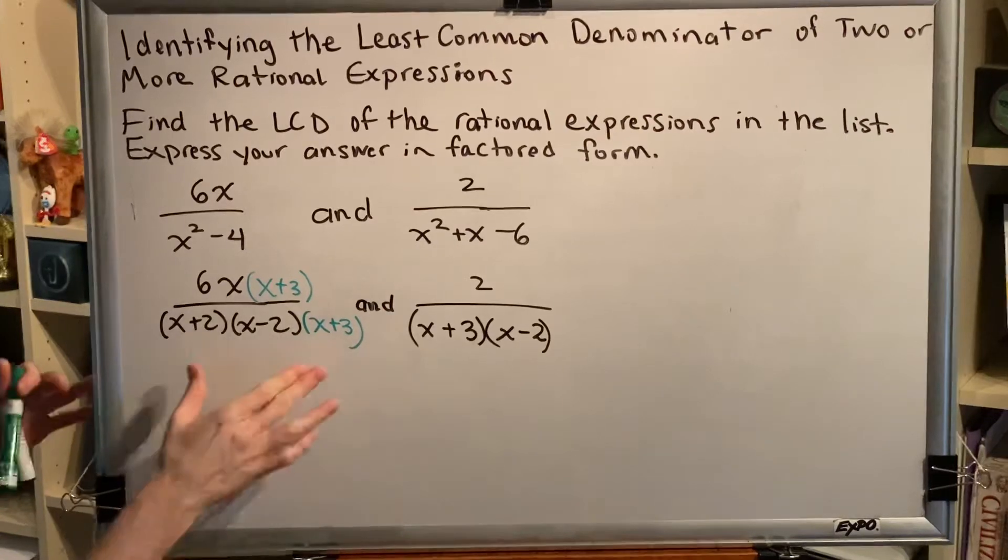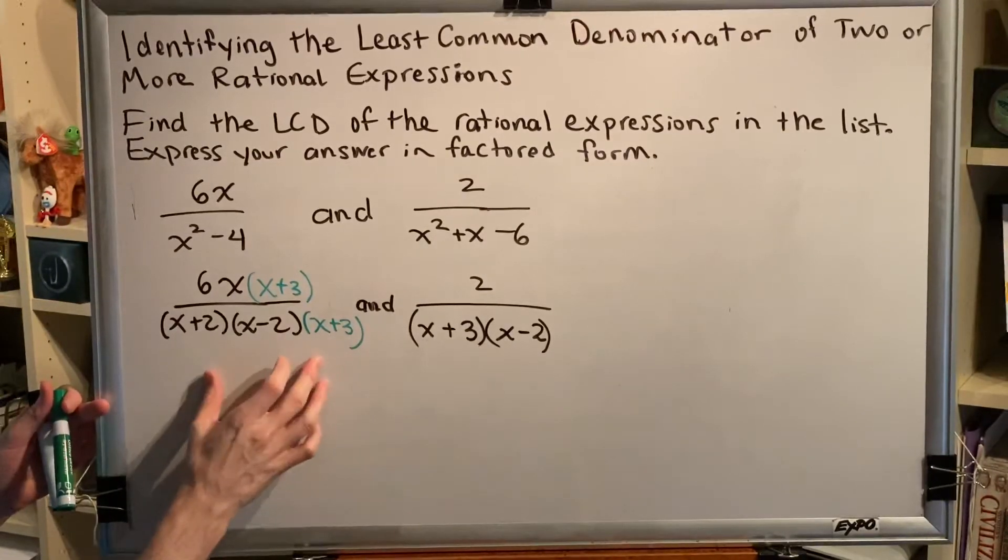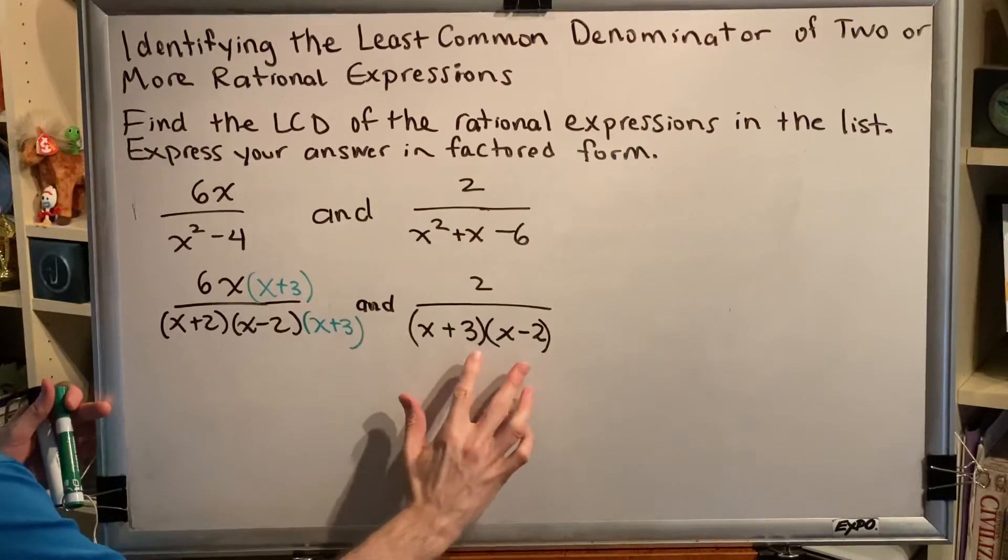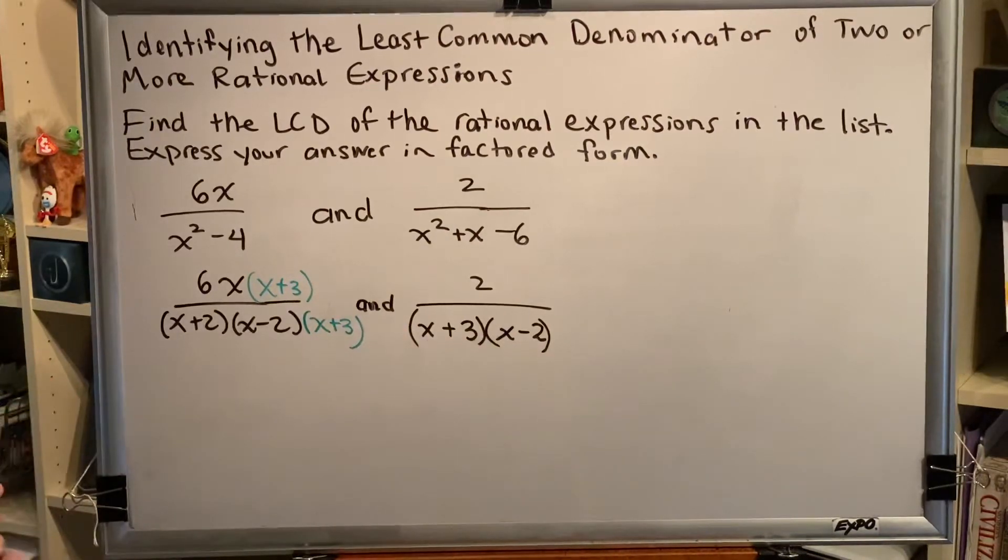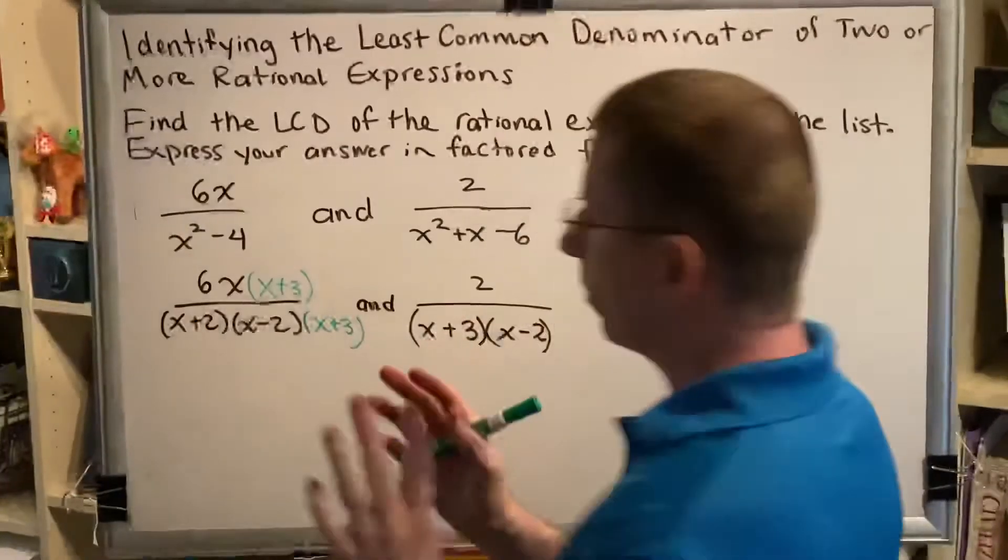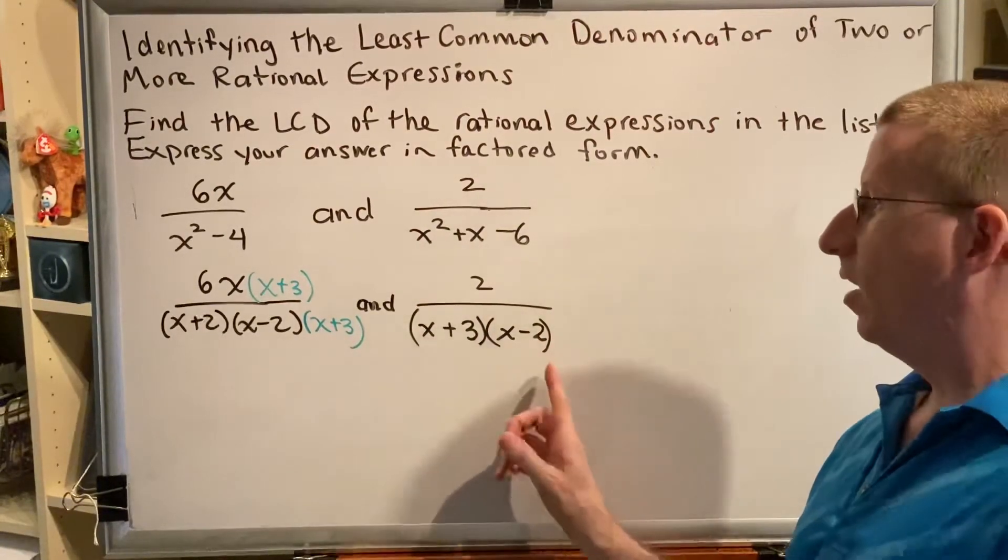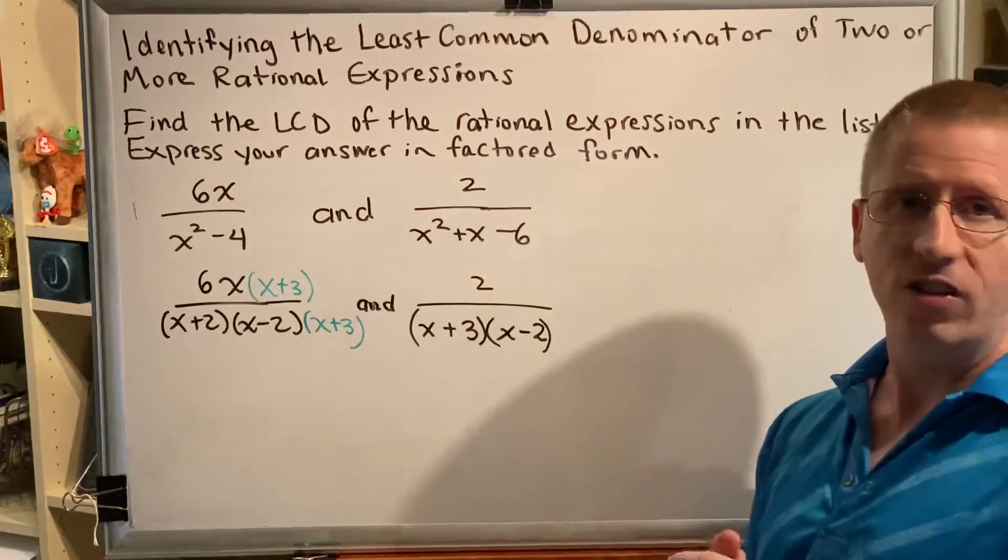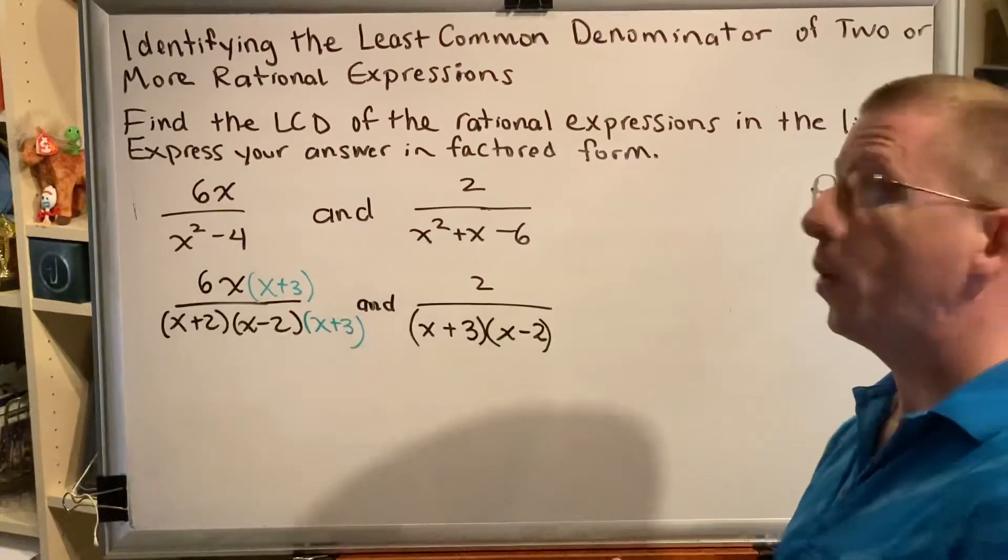So the first fraction is now satisfied. There is nothing that that fraction is missing when compared to its neighbor. So now we swap roles. Now, pretend that you are this fraction and you're looking at the other fractions denominators for factors that you wish you had.